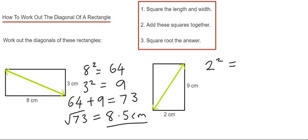Two squared is two times two which is four. Nine squared is nine times nine which is 81.